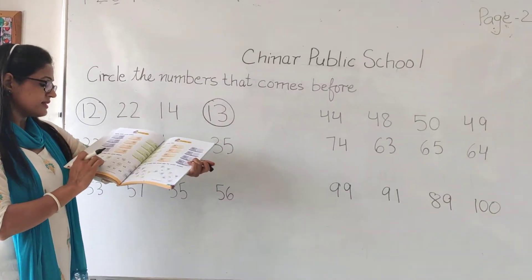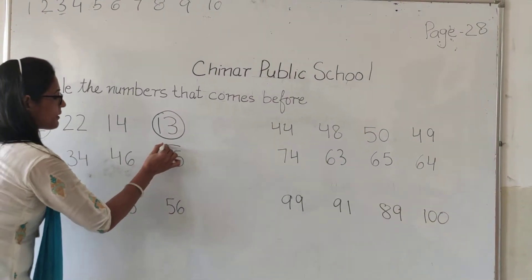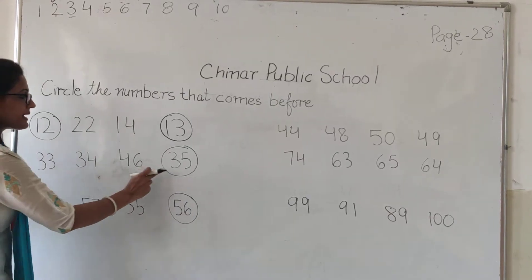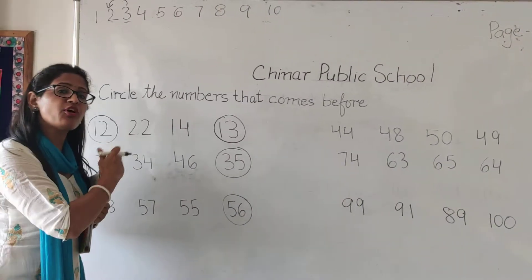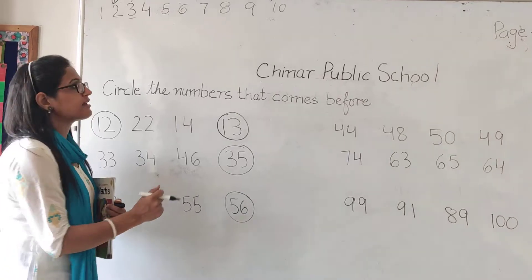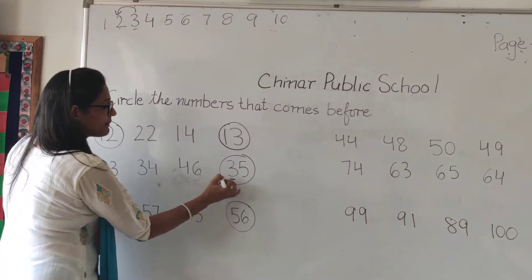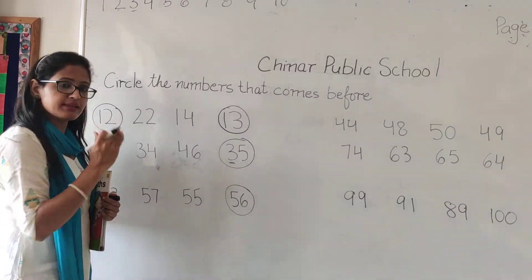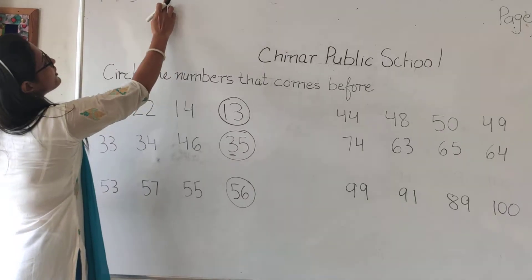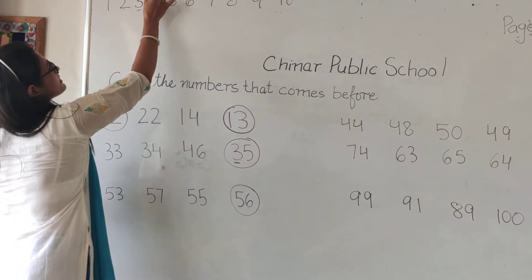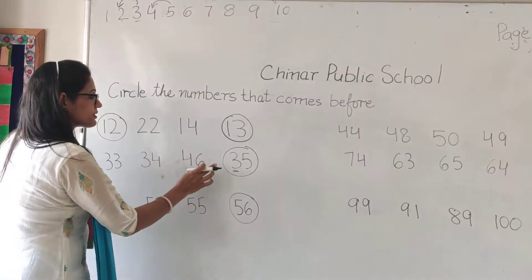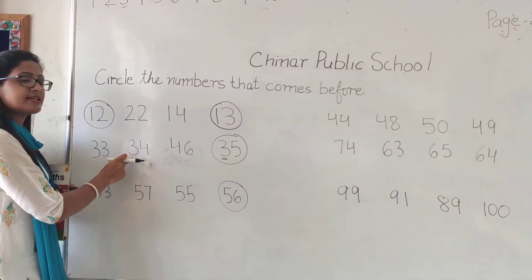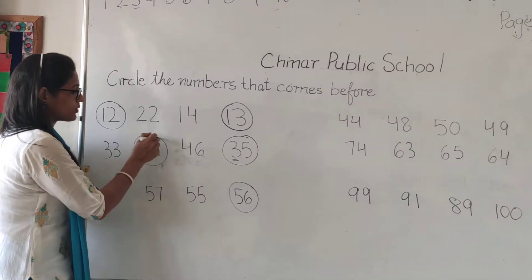Now, 35. What comes before 35? 3 will remain the same because it is in the tens place — 3, 5, thirty-five. Before 5, which number comes? 4. So it is 3, 4 — thirty-four. Circle 34.